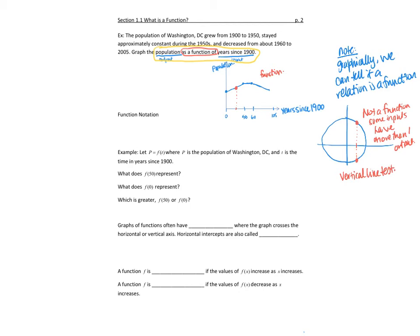Now for function notation — for this population example, I'll call the function F. A lot of times we use F, G, or H for a function name. We'll say P is the population of Washington DC, and T is the number of years since 1900. So the function notation is: P equals F of T. The population is a function of time — that tells me time is my input and F is the function name.